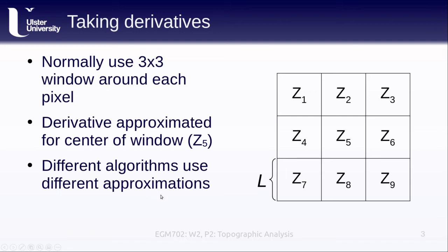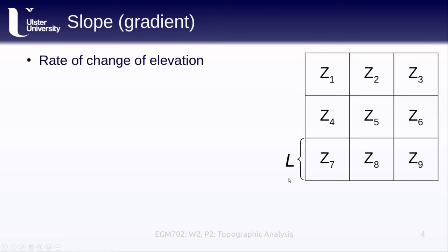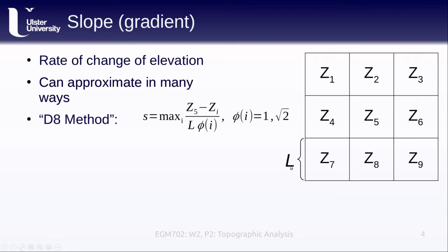If we look at the slope, for example, which is also just the gradient of the surface or the rate of change of elevation, this is the first derivative and it can be approximated in a few different ways. One of the more common ones that you might run into is something called the d8 method.